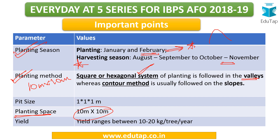For valley areas, square and hexagonal planting systems are used. For slopes, the contour method is used, where trees are planted along a boundary line. Yield ranges between 10 to 20 kg per tree per year. These planting methods — square, hexagonal, rectangular — are elaborately covered in the full video lectures, but here we focus on the key examination points.